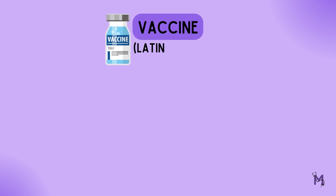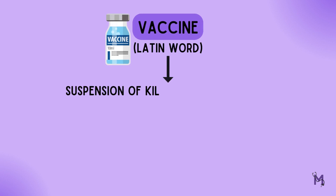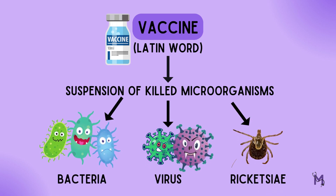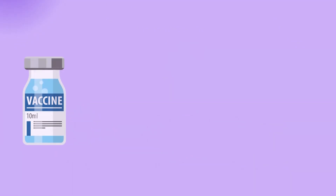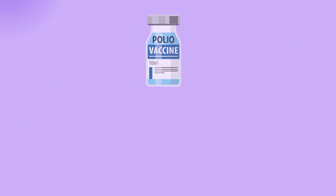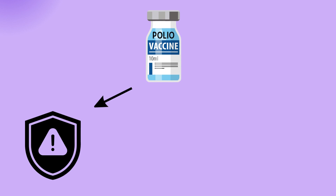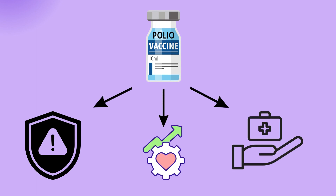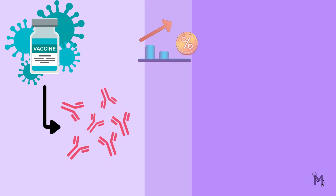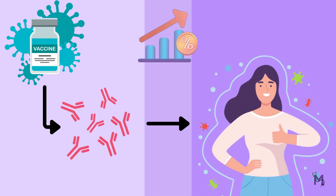The term vaccine is a Latin word which means the suspension of killed microorganisms, which could be either bacteria, viruses, or rickettsiae. We are all familiar with the concept of vaccines — for example, the polio vaccine that all of us have taken in the form of drops up until 5 years of age. This vaccine is administered for the prevention, improvement, or treatment of infectious diseases, and is effective since it stimulates the production of protective antibodies and other immune mechanisms.